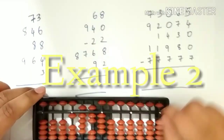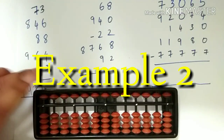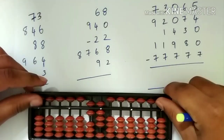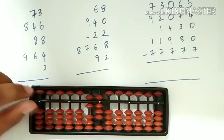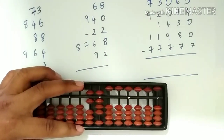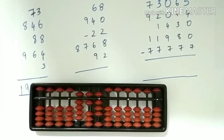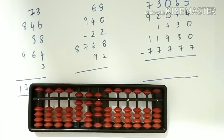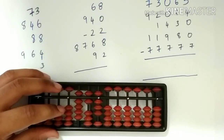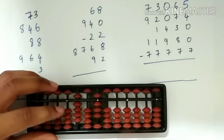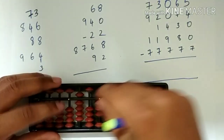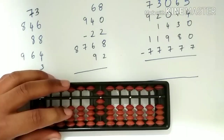Let's go to the next example. Here we have subtraction also, so let's do it. The first number is 68. Placing 68 and then adding 940, which is a 3 digit number. So we will have to add from the 100th rod — placing 9 and then 4. To add 4 on the 10th rod, we have to use big friends concept. Less the friend 6 and add the friend 1. Again here we have to add 1, which is again a big friends concept — less the friend 9 then add the friend 1.